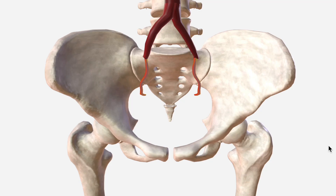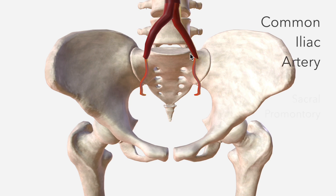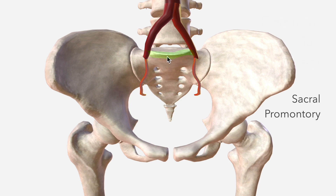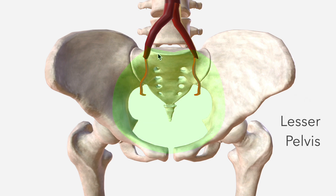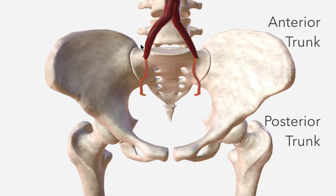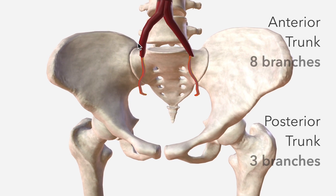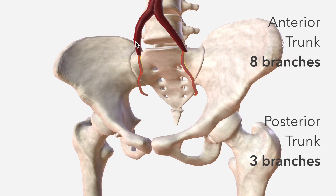The internal iliac artery is the main artery supplying the pelvis. It arises from the bifurcation of the common iliac at the level of the sacral promontory, which is the most posterior aspect of the pelvic brim. As such, the internal iliac exists in the lesser pelvis. It is divided into anterior and posterior trunks — there are eight branches from the anterior and three from the posterior.